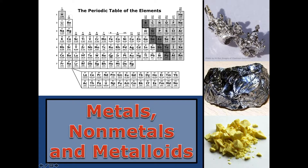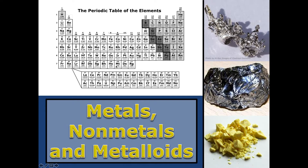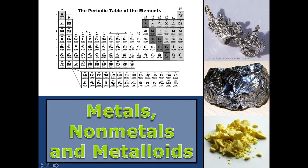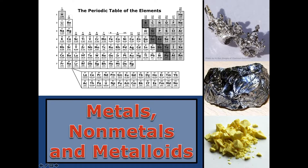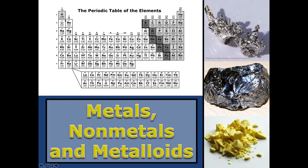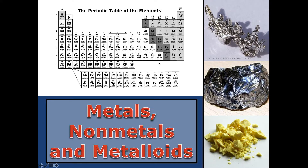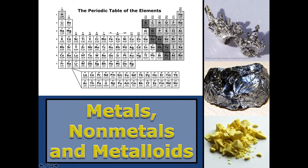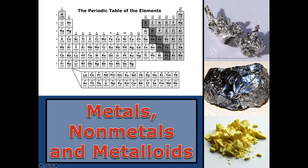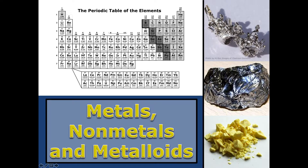As we all know, we have the periodic table here. Much of the periodic table is made of metals. Everything on the left side, not including hydrogen, is a metal. And then we come up to this stair-step line where the metalloids are. Everything along the stair-step line, except for aluminum, is a metalloid.